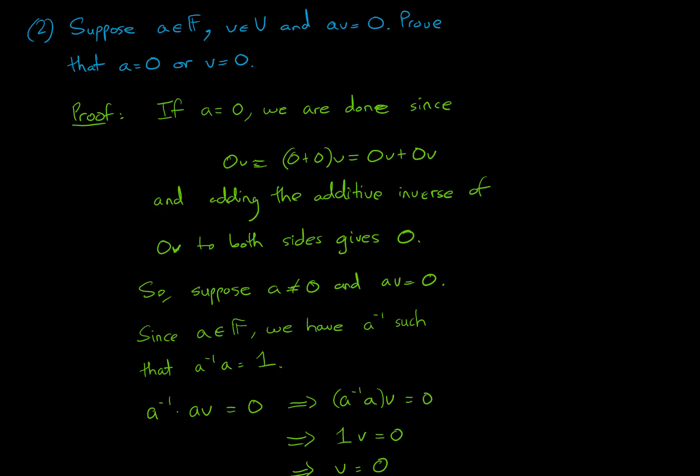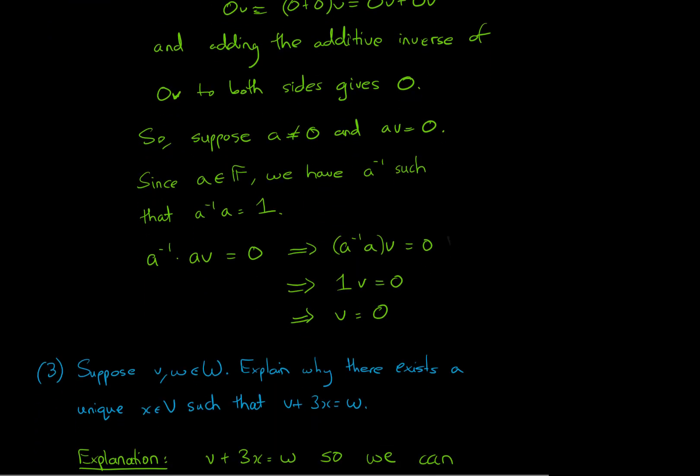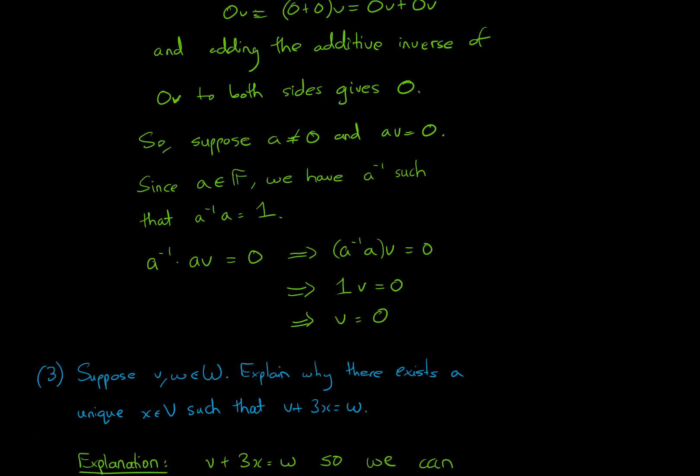We know that since a is in a field, then a must have a multiplicative inverse. And that inverse is such that a⁻¹a = 1. So using this, we have a⁻¹(av) = 0. So we use associativity, and we eventually get down to v being zero.